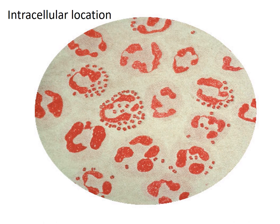This intracellular location is something you would see when making a gram stain from a clinical specimen. This can be CSF in the case of meningitis, or urethral discharge in the case of gonorrhea from a male patient.